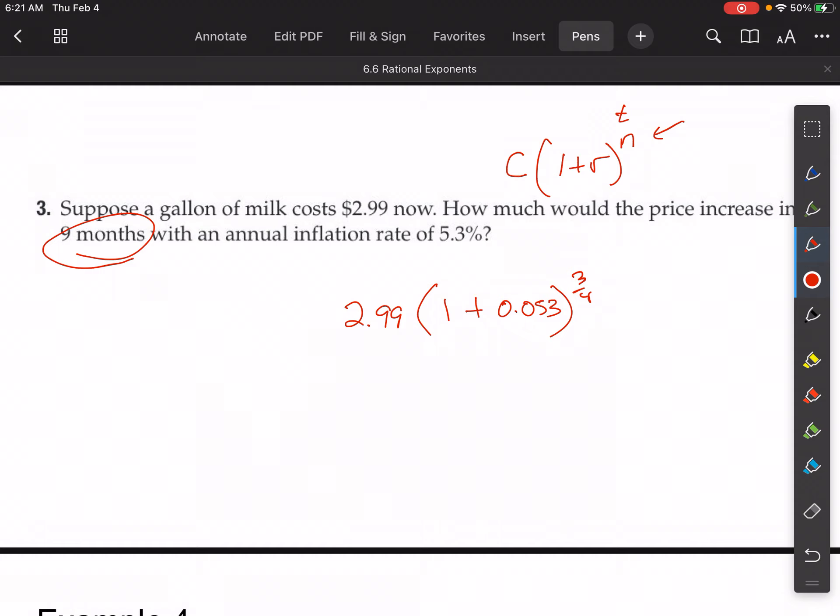So I would solve it this way. So I have 2.99, 1 plus 0.53 is 1, so I multiply this by 1.053 to the three-fourths. Then I take the fourth root of 1.053 to the third power.